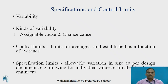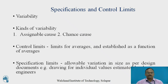Under quality engineering, the first important thing is process capability. What is the meaning of process capability, and how to make a process capable? To understand this, we must understand what is variability. Variability is a natural thing.